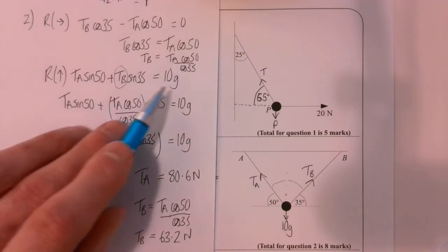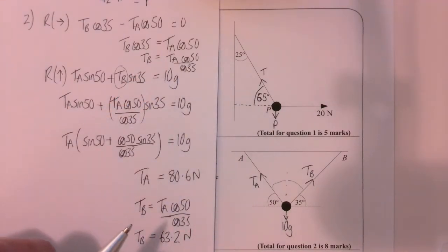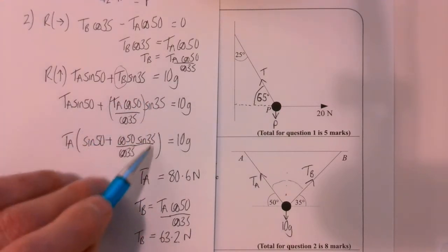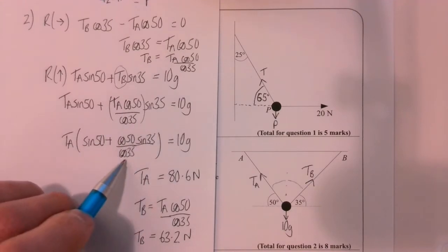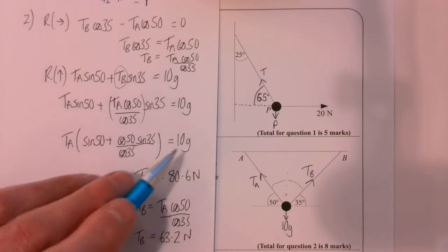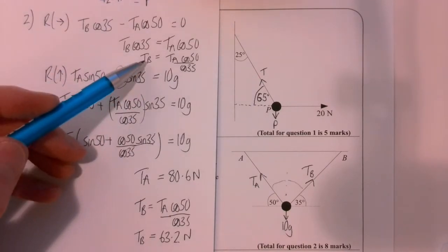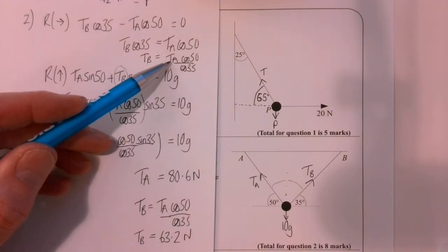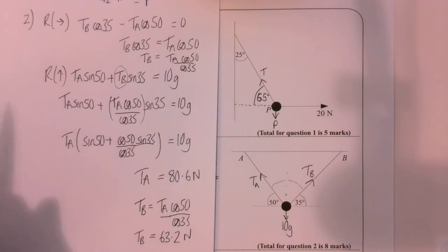I rewrote the vertical equation replacing TB with the expression from the horizontal resolving. I treated it as one big fraction and factorized TA out, giving sin 50 plus cos 50 sin 35 over cos 35. To find TA on its own, divide 10g by all of that. Once I know TA, I go back and find TB = TA cos 50 divided by cos 35, using the exact unrounded value of TA. TB comes out at 63.2 newtons. Pause here and make sure you're happy with both answers.